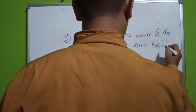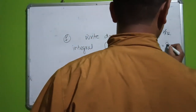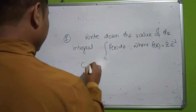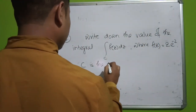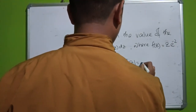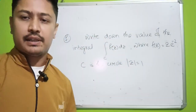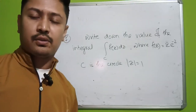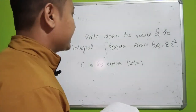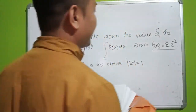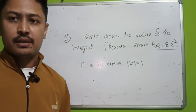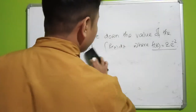The integral is over a closed curve C, where f(z) = z · e^(−2), and C is the circle |z| = 1. We need to find the value of this integral over the closed curve C. We will use a formula to solve it.